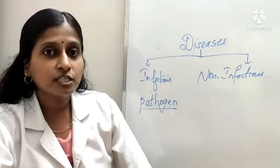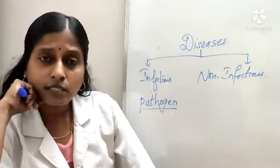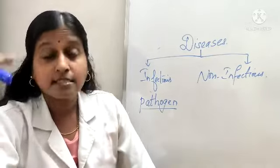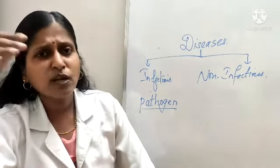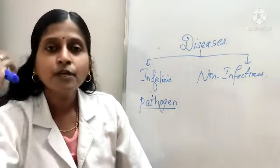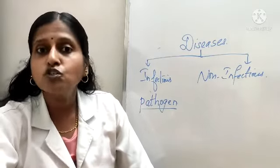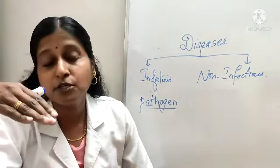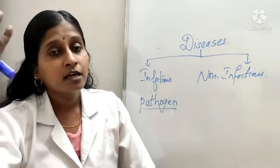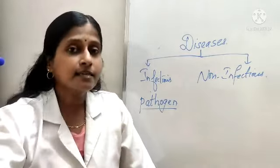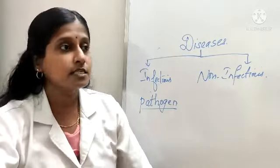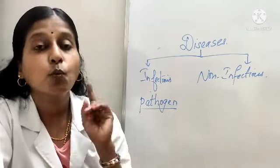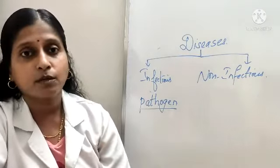So these diseases we call non-infectious diseases. Deficiency diseases can also come under this. If you are not taking vitamins or minerals properly, you can get rickets, anemia, night blindness, beriberi, scurvy. These diseases are caused because your food is not having proper vitamins or proper minerals. You can also suffer from protein-energy malnutrition — babies usually suffer because they are not having a proper protein-rich diet or carbohydrate-rich diet. These deficiency diseases also come under non-infectious diseases.